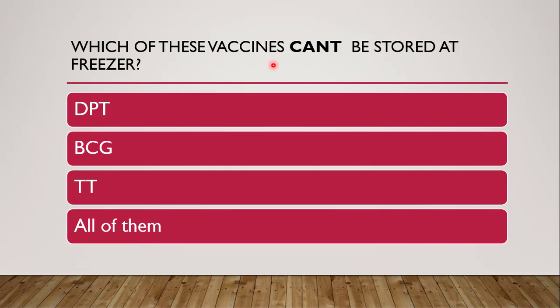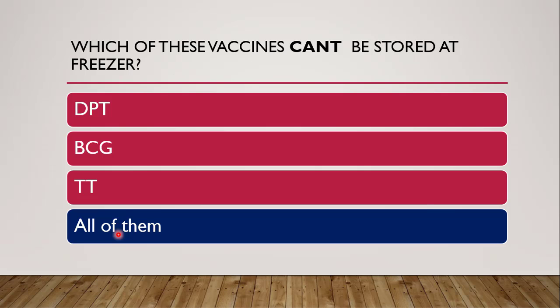Next question: which of these vaccines can't be stored at freezer? Options are DPT (diphtheria pertussis tetanus), BCG (bacillus Calmette-Guérin), TT (tetanus toxoid), or all of them. The correct answer is all of them. Polio vaccine and measles vaccine can be stored for a longer period at district or state level in the freezer, but DPT, DT, TT, and BCG are vaccines which cannot be frozen — they should not be frozen.